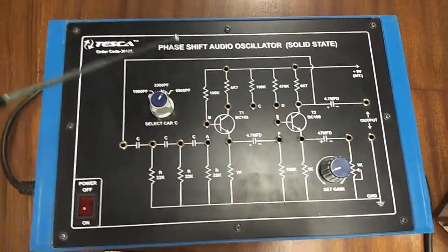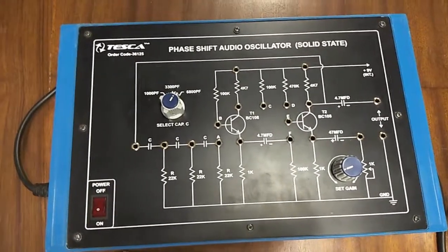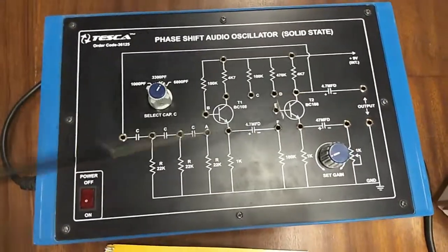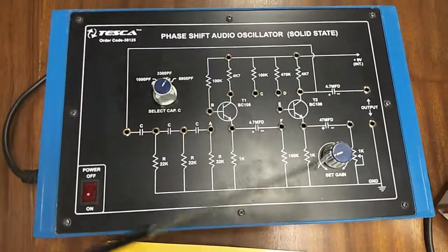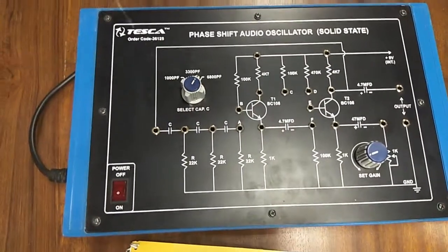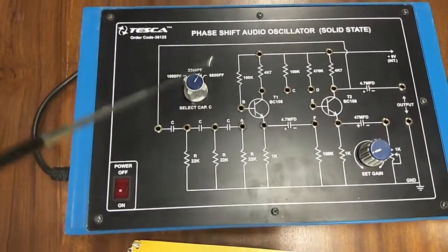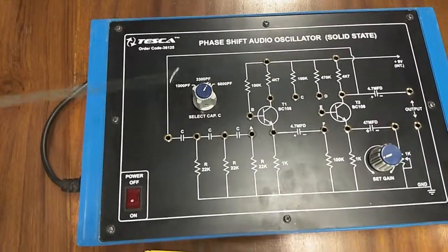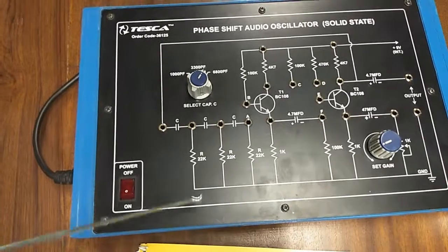This is the circuit diagram of phase shift audio oscillator. Here there are two NPN transistors and one potentiometer, and there are three capacitors: 1000 picofarad, 3300 picofarad, and 6800 picofarad. This is the selector switch for selecting the capacitor, and this is the main switch to turn on or off the trainer kit.